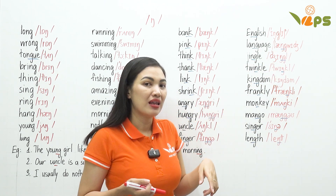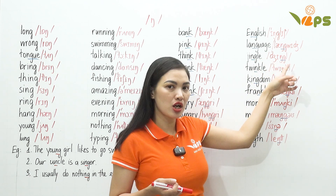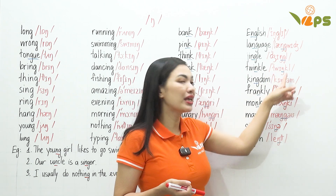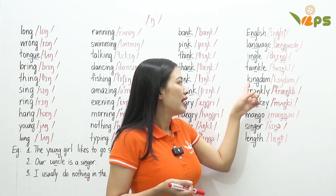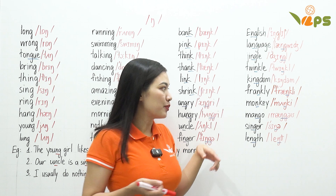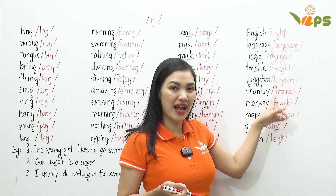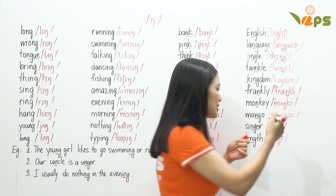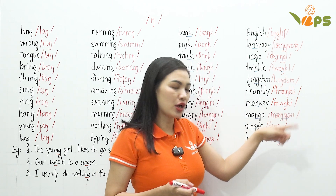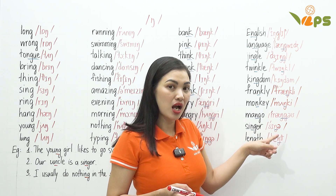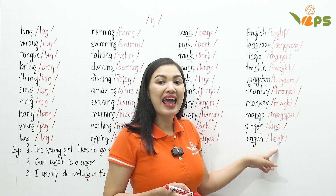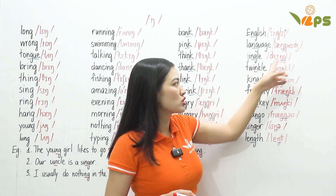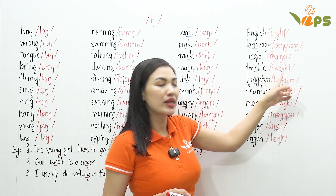Let's go to the last column: English, language, jingle, twinkle, kingdom, frankly, monkey, mango, single, length — kind of difficult!